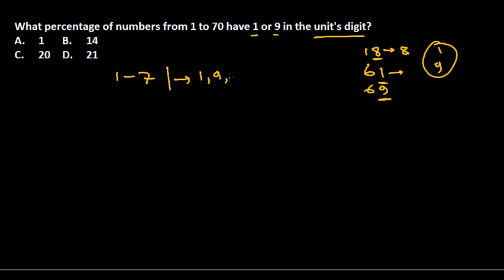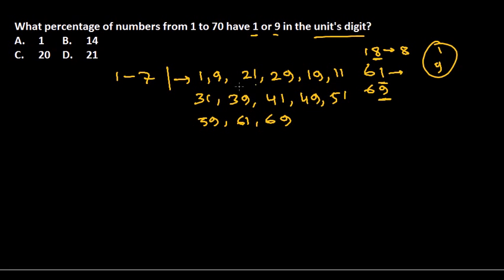From 1 to 70, if you calculate, you have 1, 9, and then 11, 19, 21, 29, 31, 39, 41, 49, 51, 59, 61, 69. So you get this many numbers.